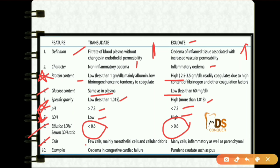In transudate, only a few cells are present — mainly mesothelial cells and cellular debris — whereas in exudate, many inflammatory cells as well as parenchymal cells can be seen. An example of transudate is edema in congestive cardiac failure, whereas pus is an example of a purulent exudate. This table is very, very important.